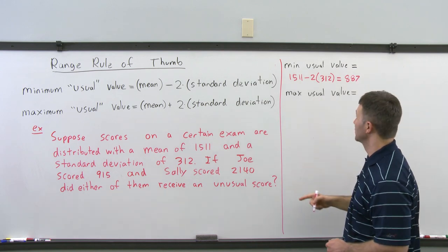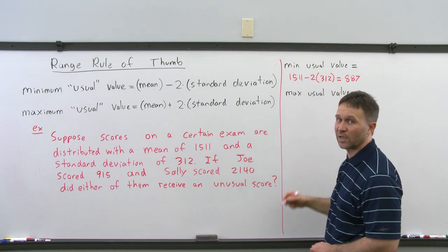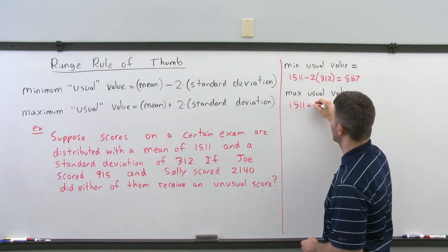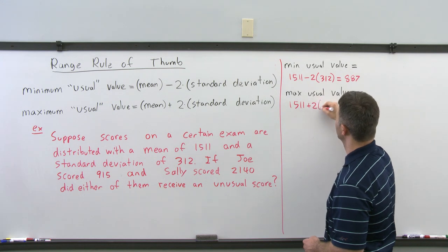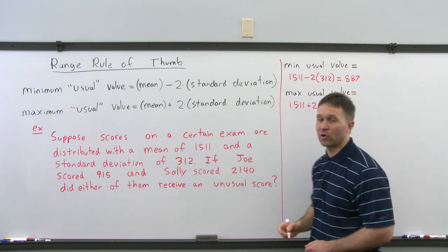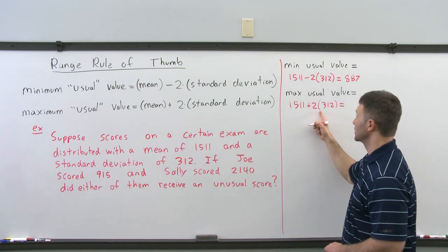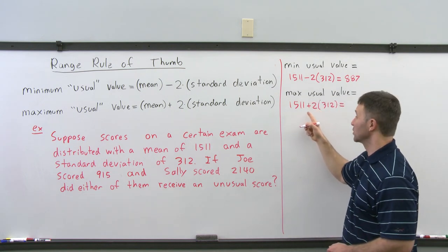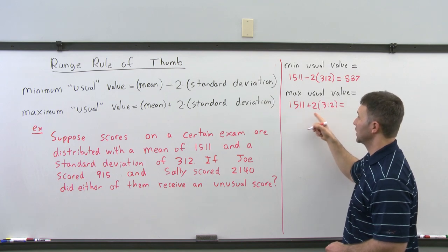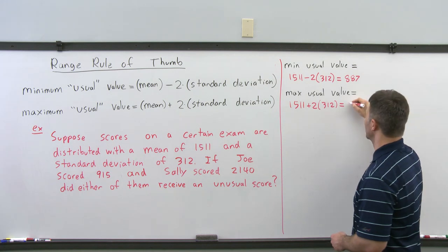Now we're going to find the max usual value. The max usual value is the mean plus two times the standard deviation, so that's 1511 plus 2 times 312. Again, order of operations applies — we do multiplication before addition. Two times 312 is 624, and 624 plus 1511 gives us 2135.